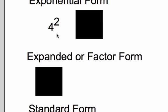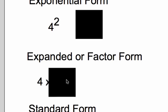Now behind door number 2 is expanded or factor form. So when you think about something being expanded, you think about an elastic being expanded. It's kind of stretched out, right? So this is it being stretched out: 4 times 4. And it's our base being multiplied 2 times, as our exponent tells us to do.